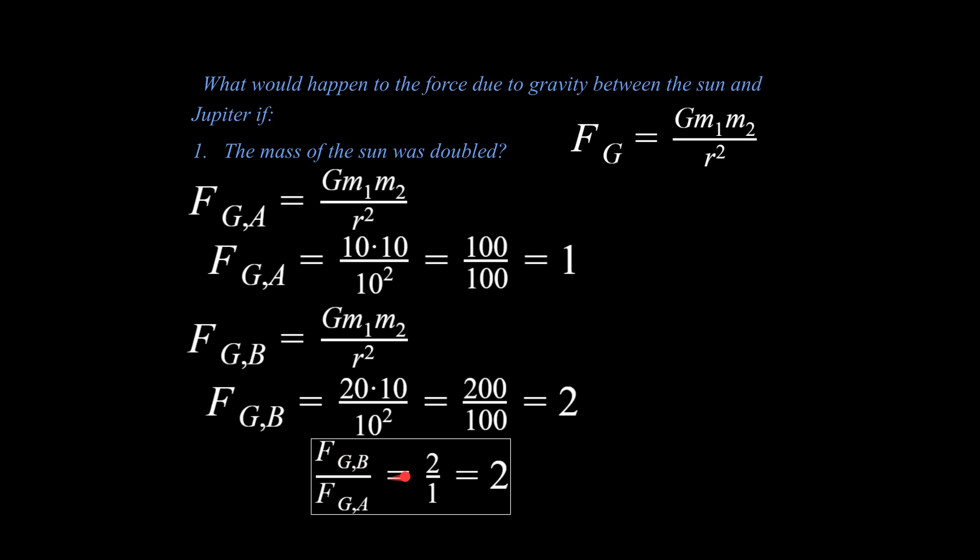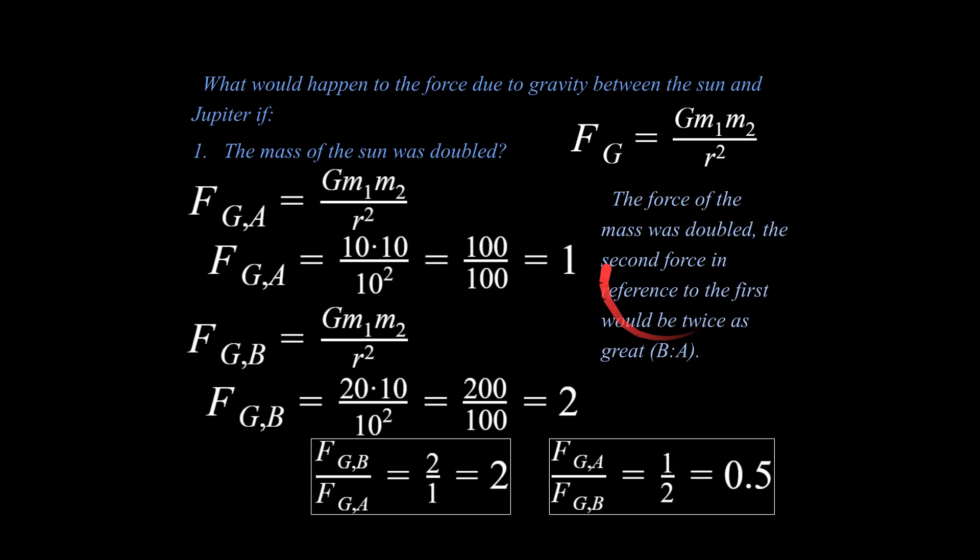2 by itself is meaningless, but 2 compared to 1 is actually what we're getting at. We can say that if we're going to do a ratio of the second example in comparison to the first, that would be a 2 to 1 ratio, meaning that the force is going to be twice as great if the mass of the sun is doubled compared to the original situation we were given. If the problem is rewritten in the opposite way, you could say the original force is one half as great as the second scenario force. The force, if the mass was doubled, the second force in reference to the first would be twice as great.